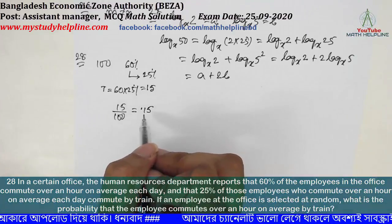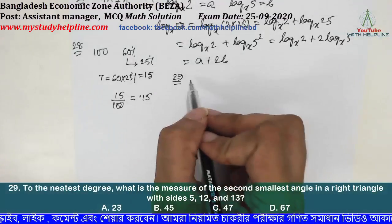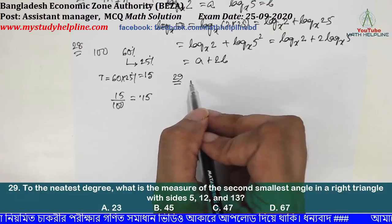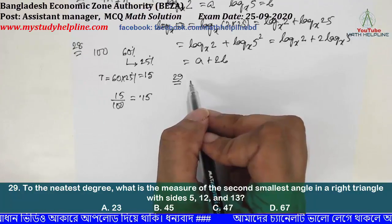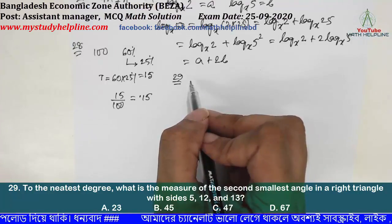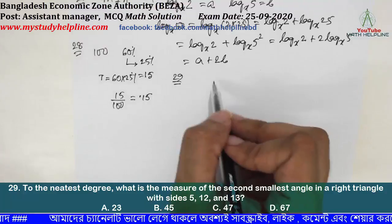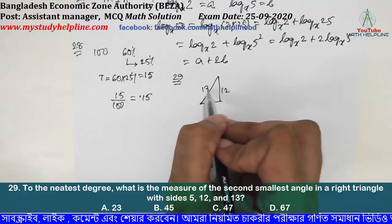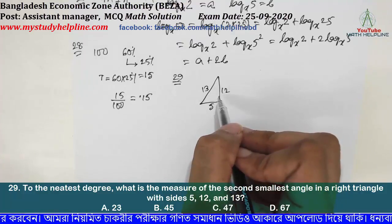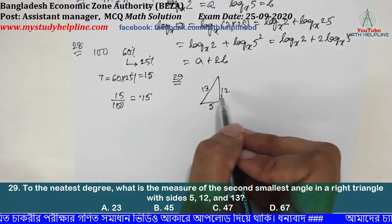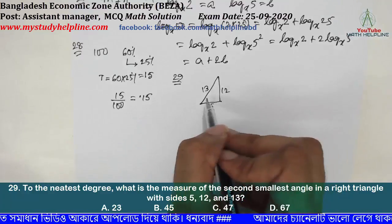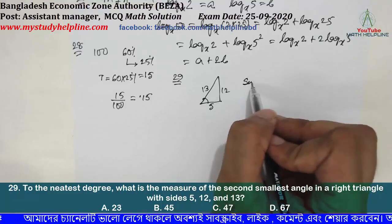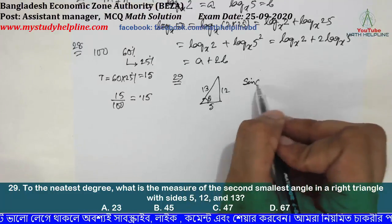Number 29: to the nearest degree, what is the measure of the second smallest angle in a right triangle with sides 5, 12, and 13? The triangle has sides 5, 12, and 13. We use the sine function to find the angles.